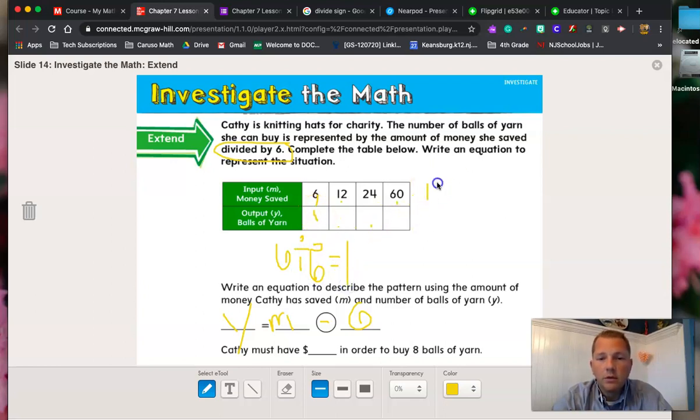Let's do twelve divided by six. And let's look at the next one, twenty-four divided by six.